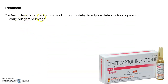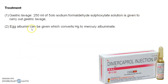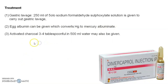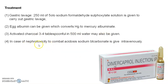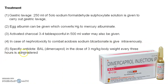For treatment of mercury poisoning, gastric lavage using 250 mL of high-percent sodium formaldehyde sulfoxalate solution is given. Egg albumin can also be given, which converts mercury to mercury albumin and acts as an antidote. Activated charcoal — 3 to 4 tablespoons in 500 mL water — may also be given. In cases of nephrotoxicity, sodium bicarbonate is given intravenously. The specific antidote is BAL (dimercaprol), administered at 3 mg per kg body weight every 3 hours.